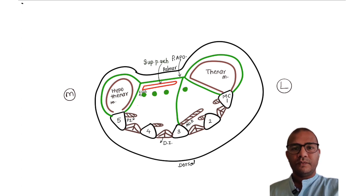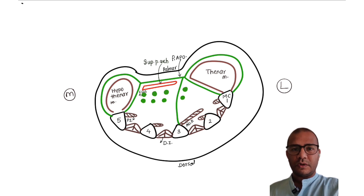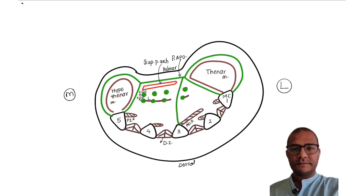Next we will draw tendons of flexor digitorum profundus. We know that lumbricals arise from flexor digitorum profundus, so we will also show lumbricals. We will draw three tendons of flexor digitorum profundus in the medial compartment and one tendon in the lateral compartment. In the lateral compartment we will also show the tendon of flexor pollicis longus.